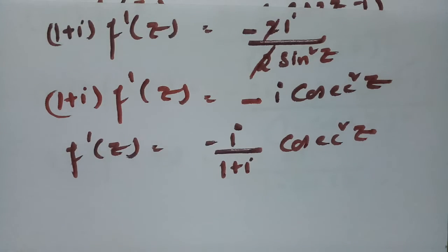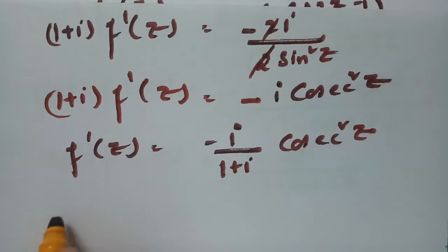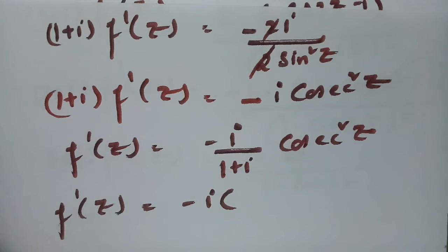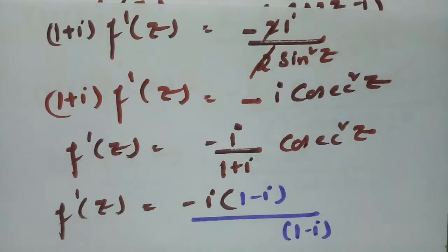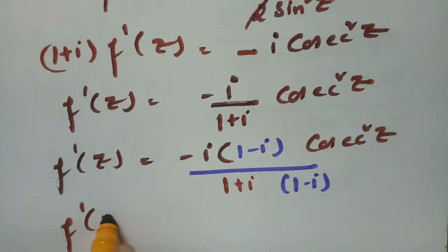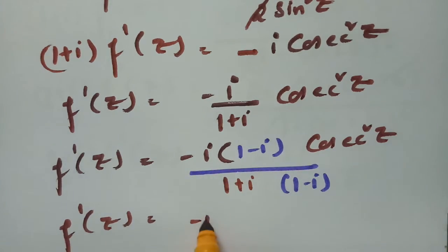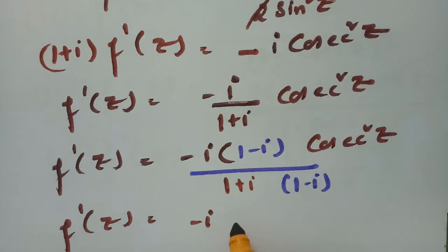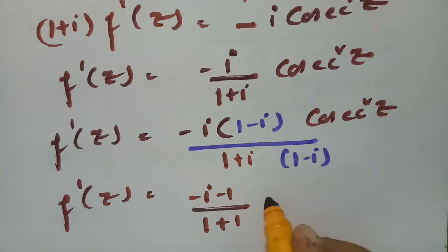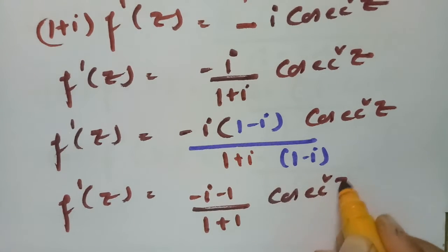Multiplying numerator and denominator by (1 - i): f'(z) = -i·(1 - i) / [(1 + i)(1 - i)] · cosec²(z) = (-i + i²) / (1 + 1) · cosec²(z) = (-i - 1) / 2 · cosec²(z), which gives f'(z) = (1 + i)/2 · cosec²(z).